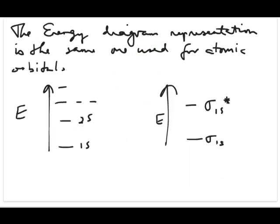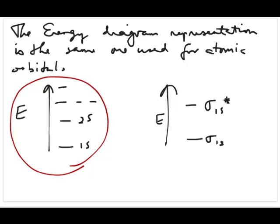We're going to use this energy diagram representation quite a bit in molecular orbital theory. It's the same type of diagram used for atomic orbitals, where we showed different energy levels. Now instead of 1s, 2s, 2p, and so on, we have a series of molecular orbitals ranked from lowest to highest stability. We'll have sigma 1s being the lower one and sigma 1s star above it. As we go through second period elements, we'll come up with more molecular orbitals with different names corresponding to those from the second period atomic orbitals.